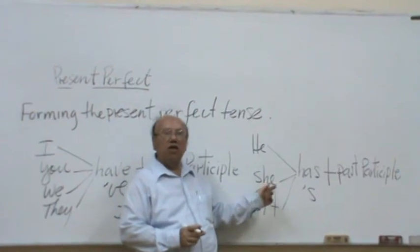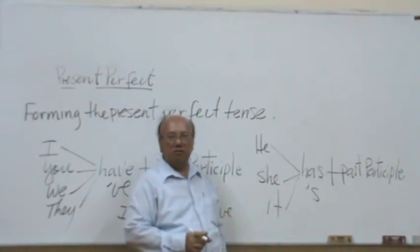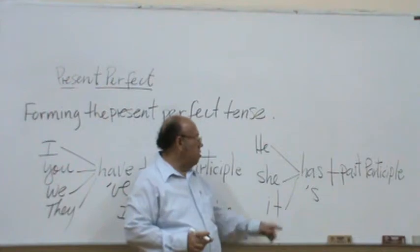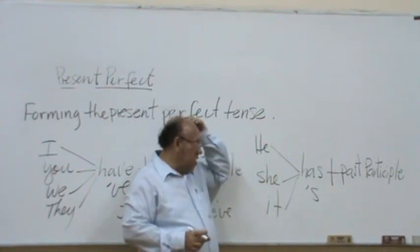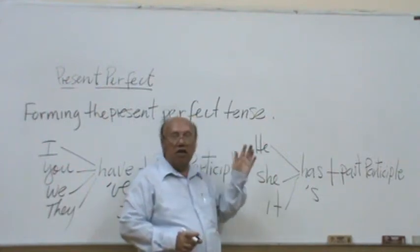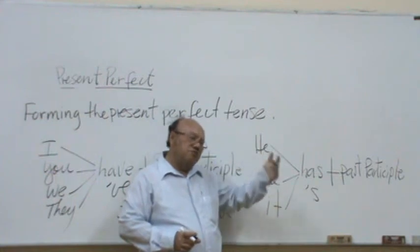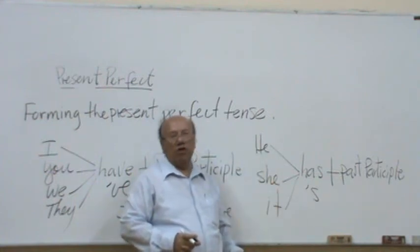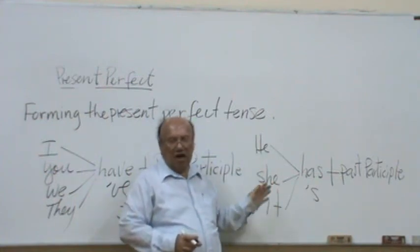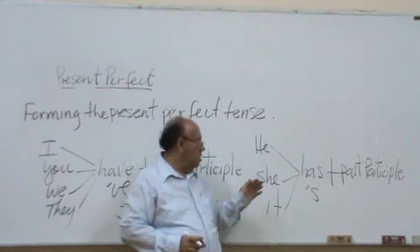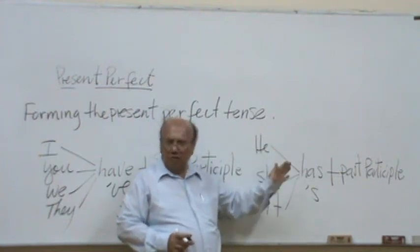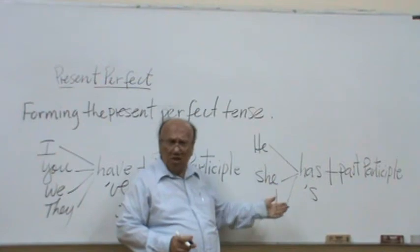Has can be contracted using apostrophe S with the pronouns. It could be he, it could be she or it could be it. So, for example, he has spoken English, el ha hablado inglés, in Spanish we can say he's spoken English. She has cleaned the room, ella ha limpiado el cuarto, she's cleaned the room.